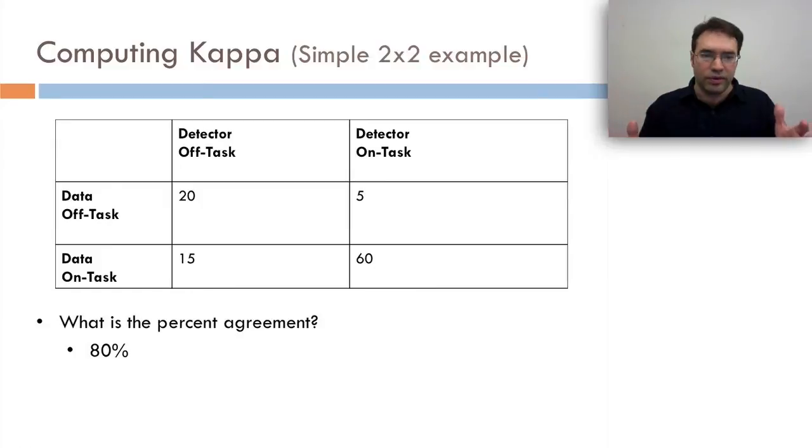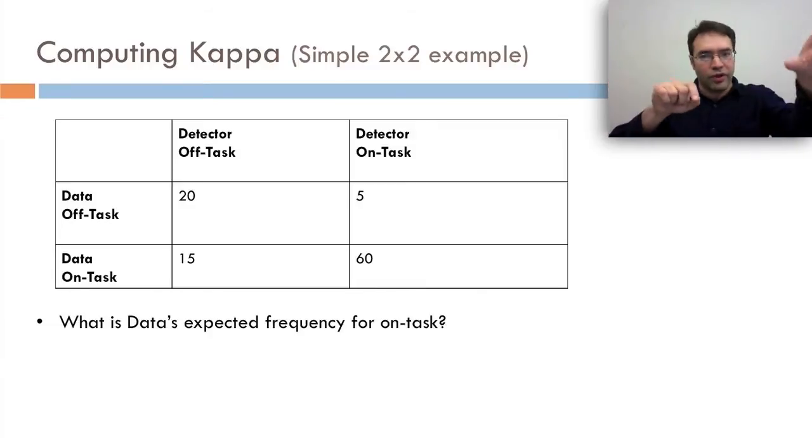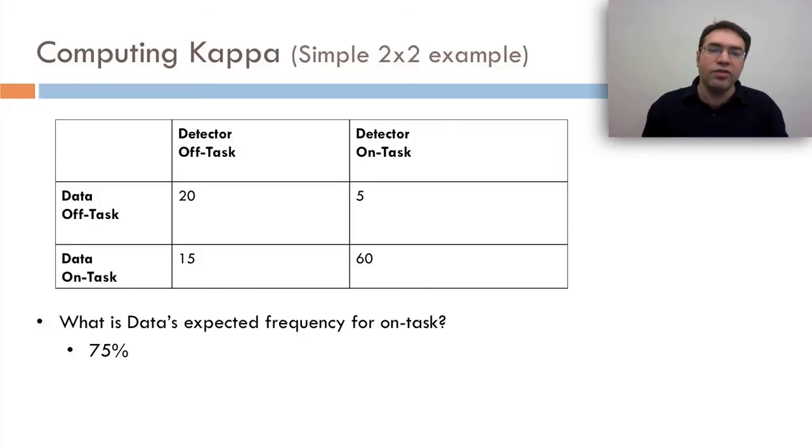Well, first of all, we can say, what's the percent agreement? The percent agreement is 20 cases where they agree and 60 cases where they agree, for a total of 80 out of 100, 80%. What's data's expected frequency for on task? We're going to look at the frequency for both on task and the frequency for off task. Well, it's 75%. How do we get that? We take the data and the cases where the data says on task, 15 plus 60. 15 plus 60 is 75. So in 75% of cases, we have the data expecting to be on task.